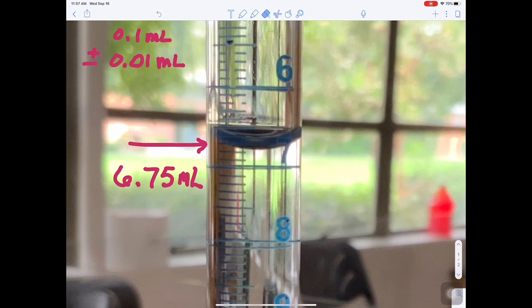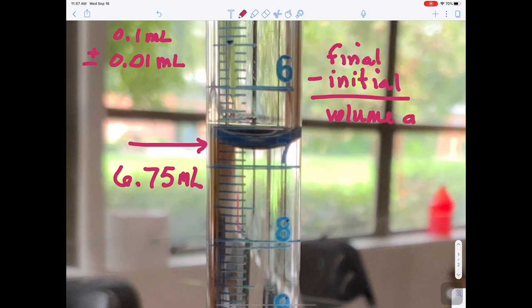After we finish the titration, we'll look at the final reading. And then to find the volume added, we'll take the final reading and subtract the initial reading. And that will give us the volume added. And that's what we're interested in.